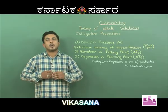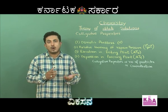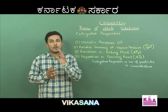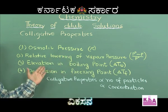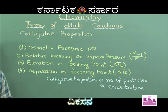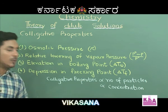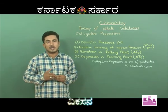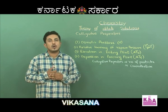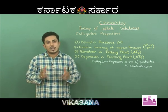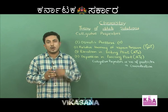Colligative properties are the properties of a dilute solution that depend upon the number of solute particles and not on the nature of the solute. We come across four colligative properties: osmotic pressure, relative lowering of vapour pressure, elevation in boiling point, and depression in freezing point. Colligative properties are directly proportional to the number of particles, i.e., directly proportional to concentration. Equimolar solutions of two different non-volatile, non-electrolyte substances have the same values of colligative properties.